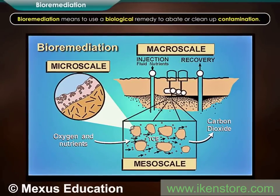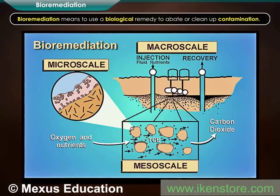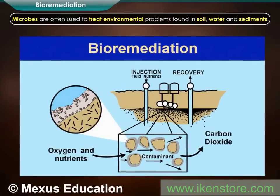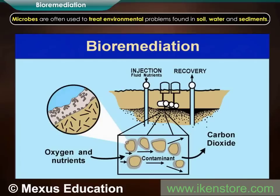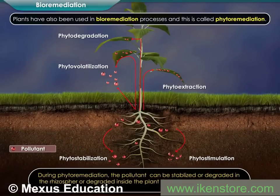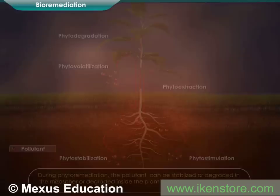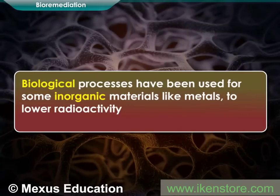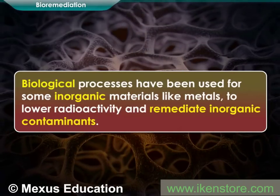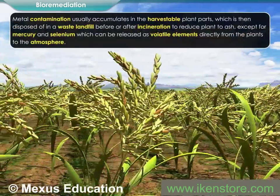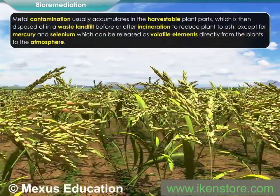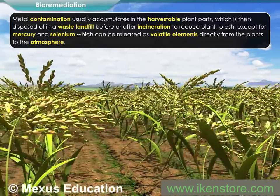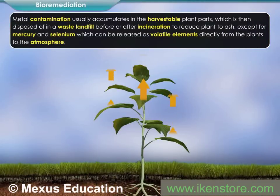Bioremediation means to use a biological remedy to abate or clean up contamination. Microbes are often used to treat environmental problems found in soil, water, and sediments. Plants have also been used in bioremediation processes, and this is called phytoremediation. Biological processes have been used for some inorganic materials like metals to lower radioactivity and remediate inorganic contaminants. Metal contamination usually accumulates in the harvestable plant parts, which is then disposed of in a waste landfill before or after incineration to reduce the plant to ash, except for mercury and selenium which can be released as volatile elements directly from the plants to the atmosphere.